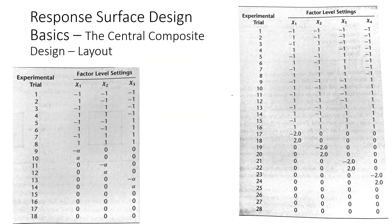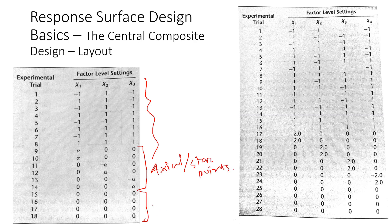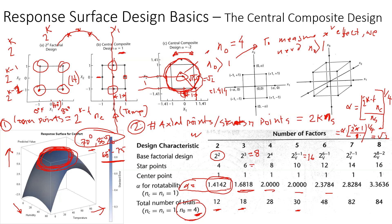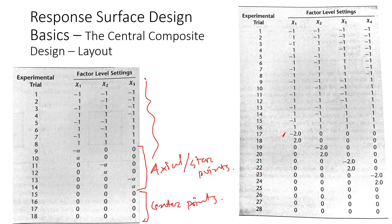The basic layout for CCD has been created in Excel before. The new additions are the axial points (star points) and the center point. For three variables the design includes those elements accordingly. For four variables, alpha equals 2, which can be verified using the earlier formula or table.